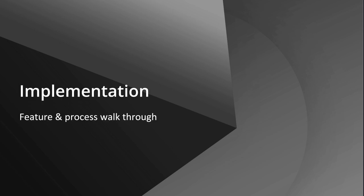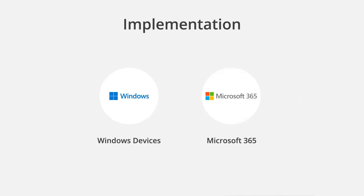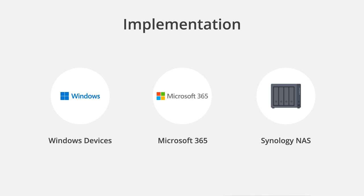Let's talk about the implementation for the entire C2 Backup solution. We'll start with how to implement on Windows devices — simply installing an agent and walking through a wizard for Windows 7, 10, 11, and Windows Servers. We'll then move into Microsoft 365 implementation, which is as simple as entering your admin credentials and following the wizard inside C2 Backup to link the two clouds together. We'll also cover how to still back up your Synology NAS using Synology's Hyper Backup solution to Synology C2 Storage.